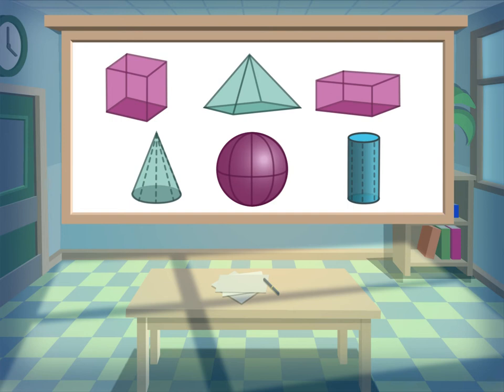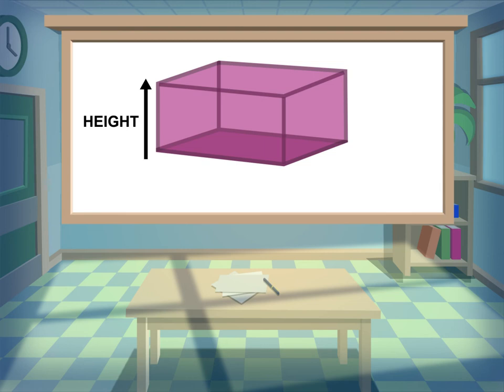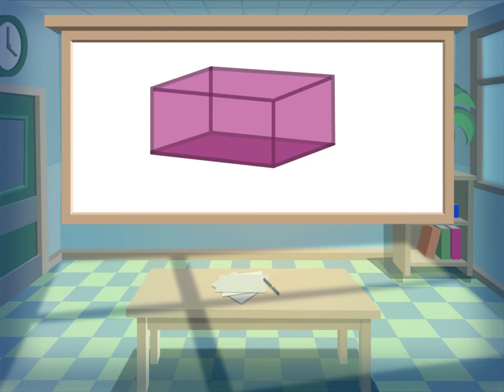These shapes are called 3D shapes. It means they have three dimensions: height, width and length. They look like real things compared to the flat 2D shapes.